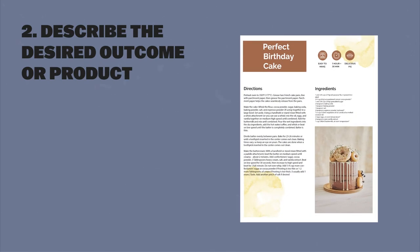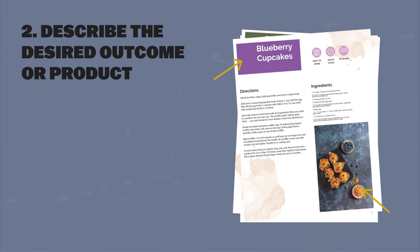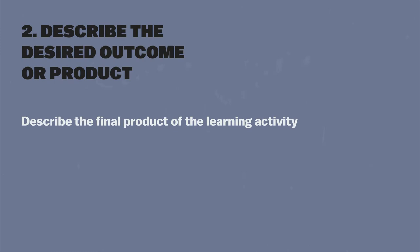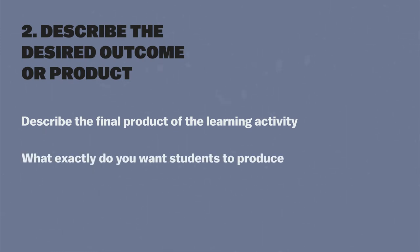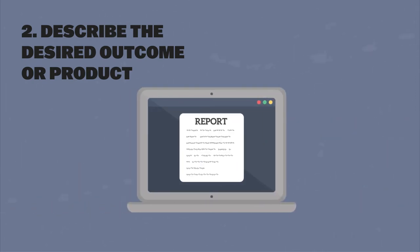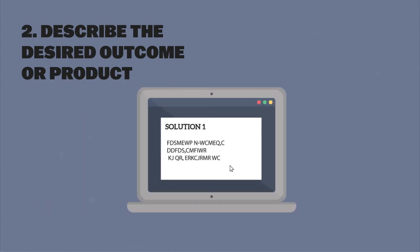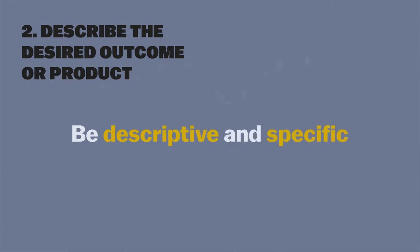Component two: describe the desired outcome or product. A recipe will tell you what the ultimate goal is — are you baking a cake, a pie, or a tray of cupcakes? Most recipes provide a photo showing what the finished product looks like. Similarly, describe the final product of the learning activity. What exactly do you want students to produce and how will you collect it? Will they submit a report online, hang a poster in the classroom, or document a solution they show via screen sharing? Be descriptive and specific, as this gives students a clear goal and helps remove anxiety about participating.